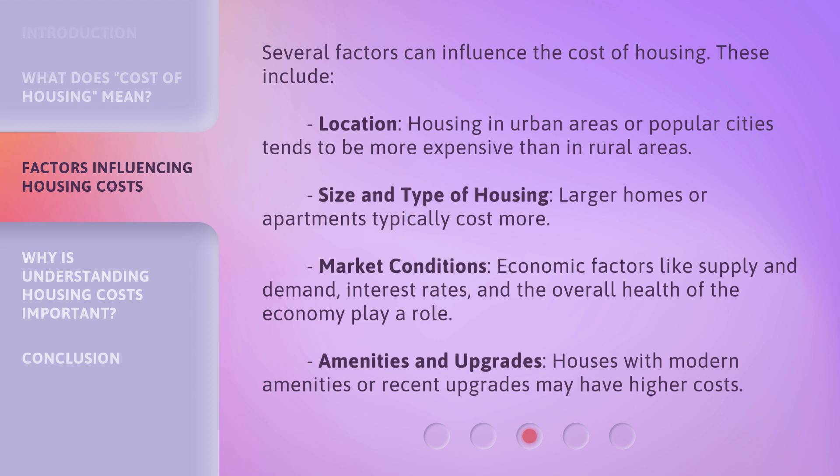Several factors affect the cost of housing. These include location — housing in urban areas or popular cities tends to be more expensive than in rural areas. Size and type of housing also matter, as larger homes or apartments typically cost more. Market conditions such as economic factors like supply and demand, interest rates, and the overall health of the economy play a role. Finally, amenities and upgrades — houses with modern amenities or recent upgrades may have higher costs.